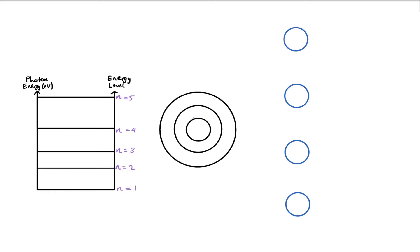So this inner circle represents n equals 1, this is n equals 2, this is n equals 3, and so on.